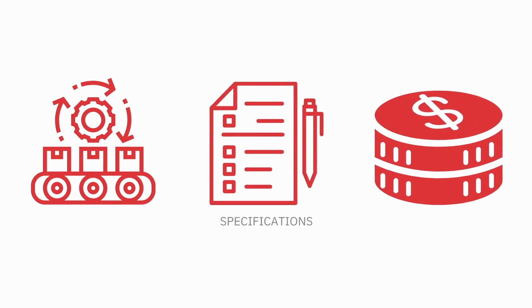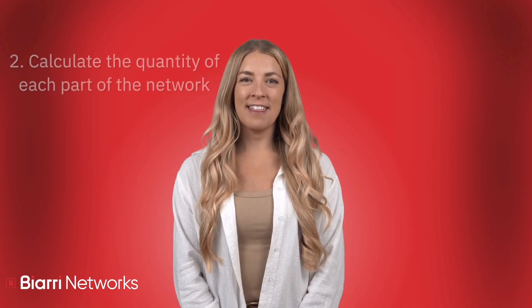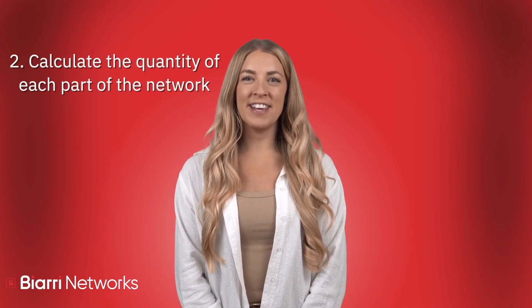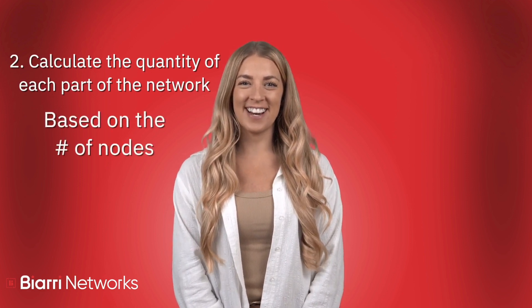Upon defining your architecture you should have a general idea of the components that you'll need. It's important to find specific products that meet your network's requirements. This may involve researching different manufacturers, comparing specifications and evaluating costs. You'll then need to calculate the quantity of each part of the network based on the number of nodes in the overall architecture.